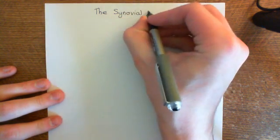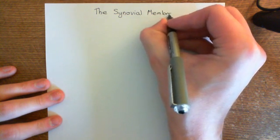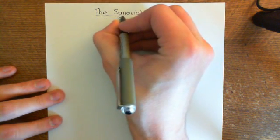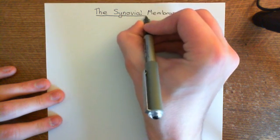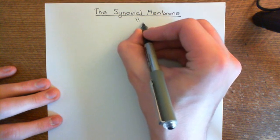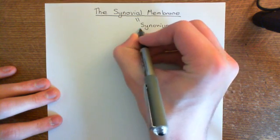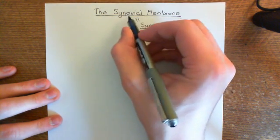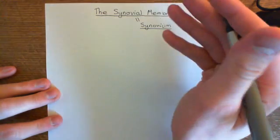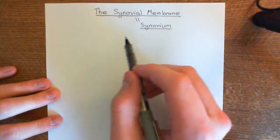The structure for this video is we're going to start off by revisiting the structure of a synovial joint quickly, and then what we'll do is look in detail at the structure of the synovial membrane. The synovial membrane is also known as the synovium for short, so the synovium means the synovial membrane.